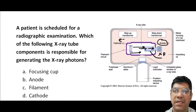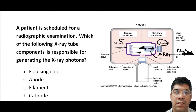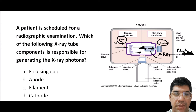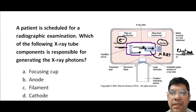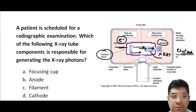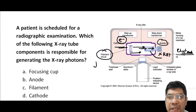Think of the cathode as a water tap that releases a stream of tiny particles known as electrons, similar to how a tap releases water when turned on. The filament is like a heating element in an old-style light bulb, responsible for producing electrons when heated — just like how a filament in a light bulb gets hot and produces light.